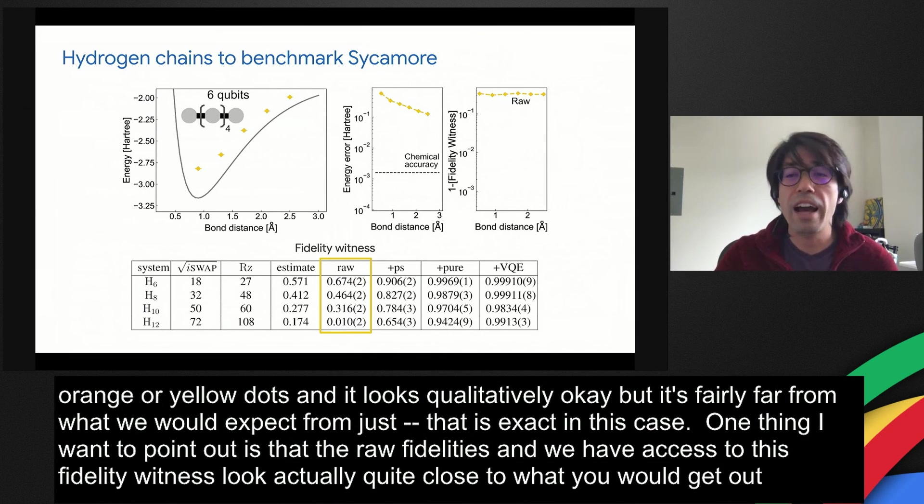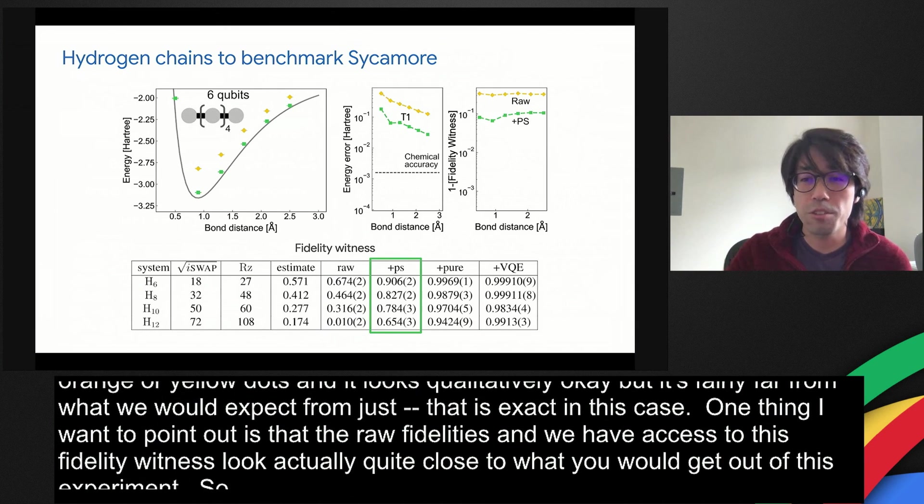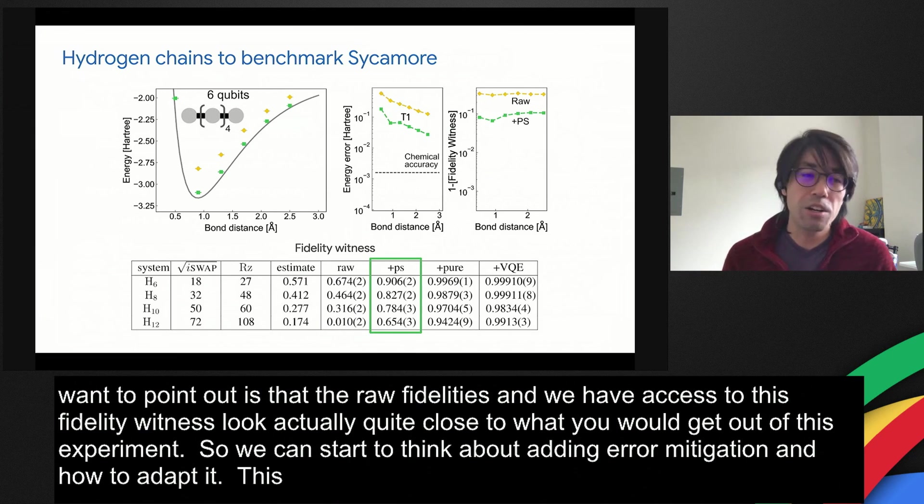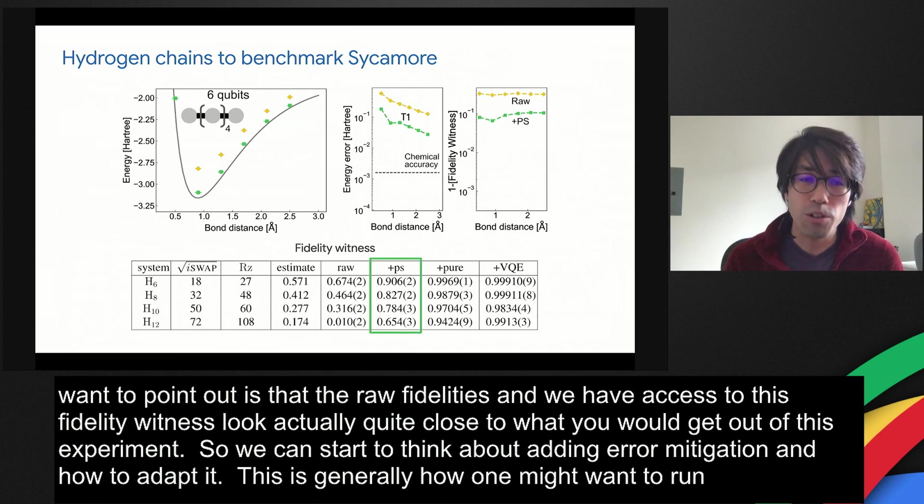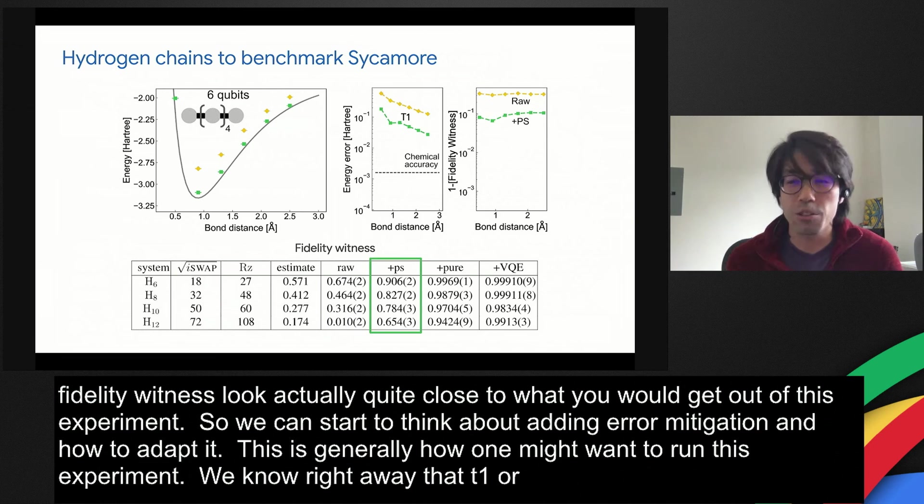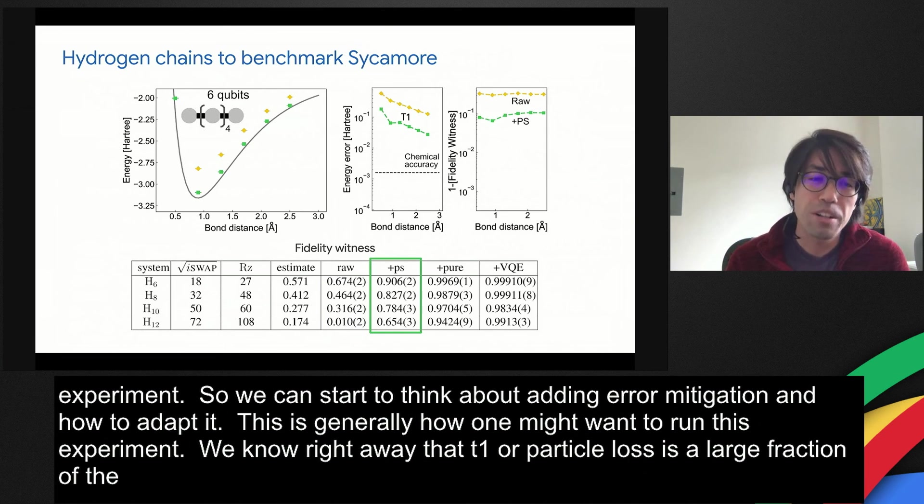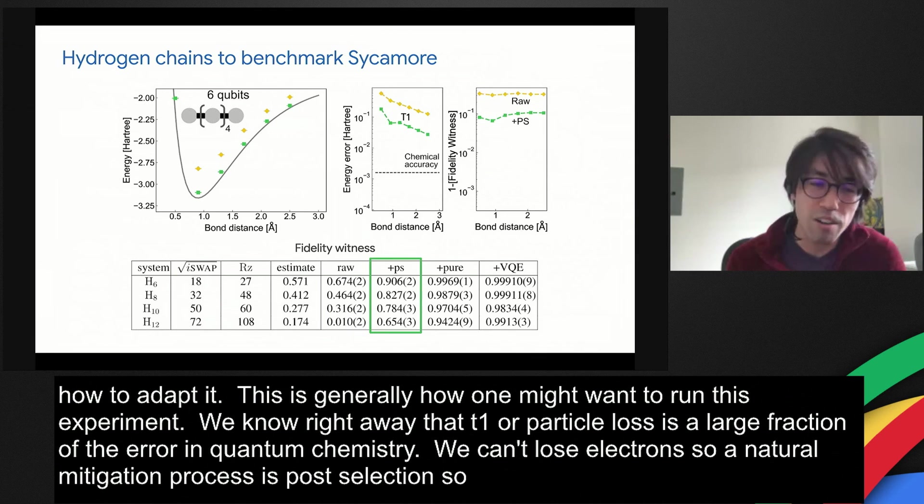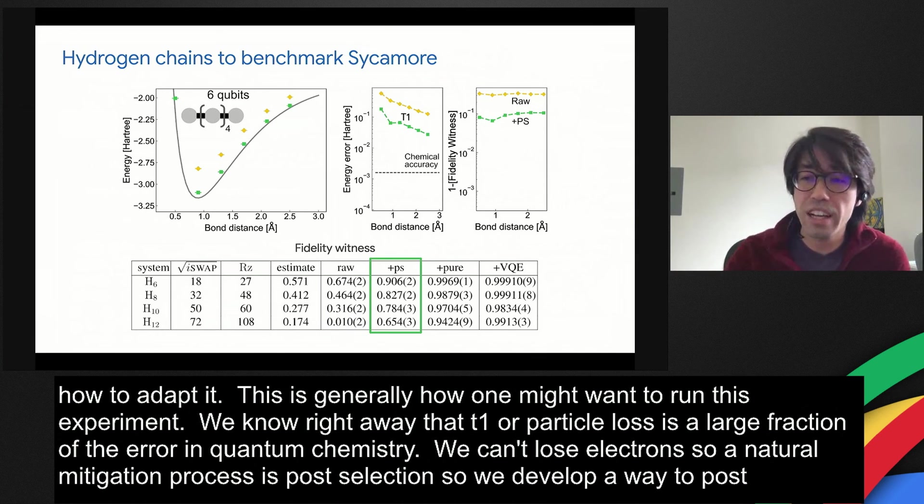We can start to think about adding error mitigation and how to adapt our algorithm. This is generally how one might want to run NISC experiments. We know right away that T1 loss or particle loss is a large fraction of the error in quantum chemistry. We can't lose electrons. A natural mitigation process is post-selection. We developed a way to post-select the entire one-RDM. Of course, that vastly improves the fidelity.